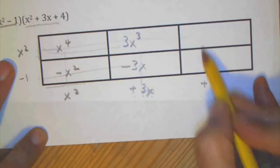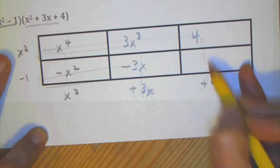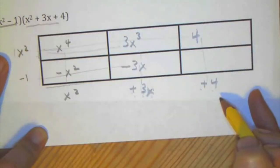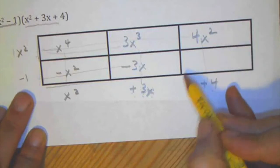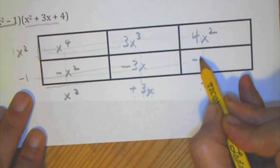Here is x squared times 4. So the sign positive times a positive is positive, 1 times 4 is 4, and then the variable is x squared. And then the last one, negative 1 times 4, positive 4 is negative 4.